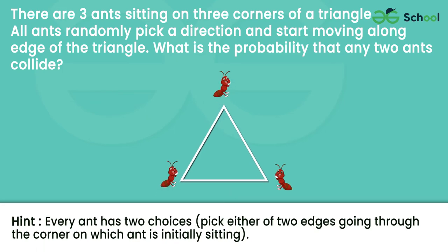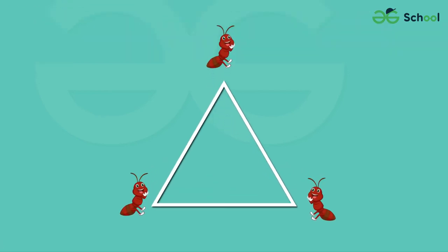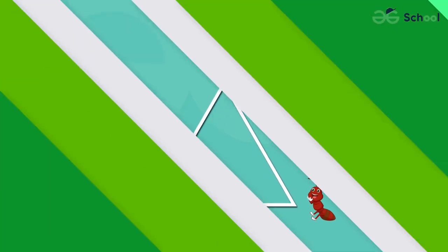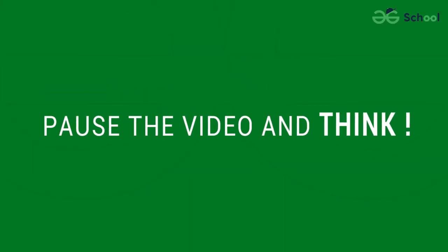Every ant has 2 choices: pick either of the 2 edges going through the corner on which the ant is initially sitting. Pause the video and think.